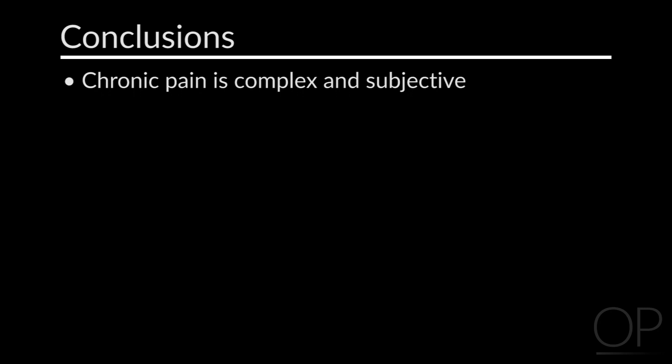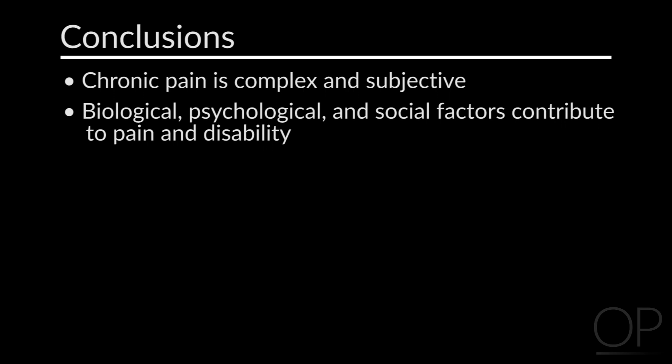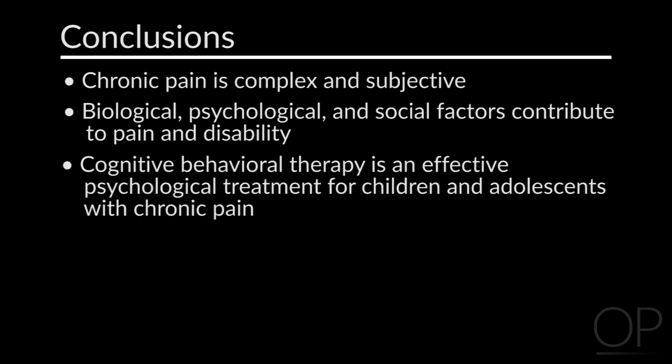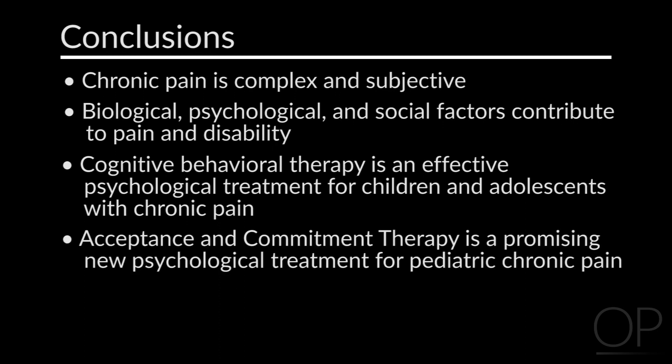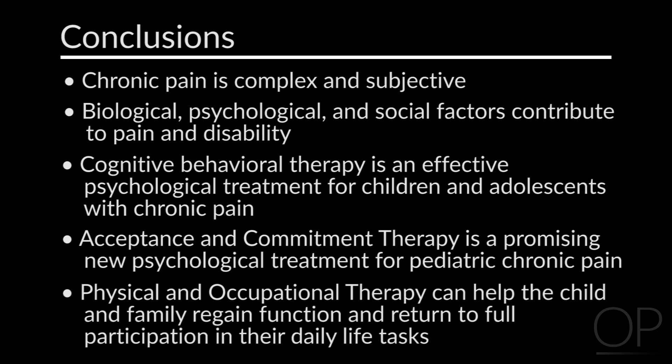In conclusion, chronic pain is complex and subjective. There are biological, psychological, and social factors that contribute to pain and disability. Cognitive behavioral therapy is an effective psychological treatment for children and adolescents with chronic pain. ACT is a promising new psychological treatment for pediatric chronic pain. Physical and occupational therapy can help the child and family regain function and return to full participation in all their daily life tasks.